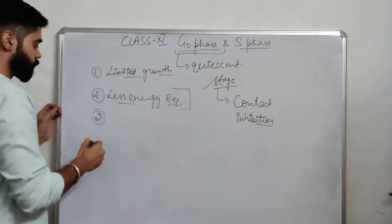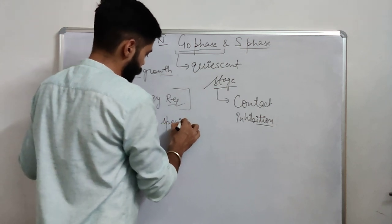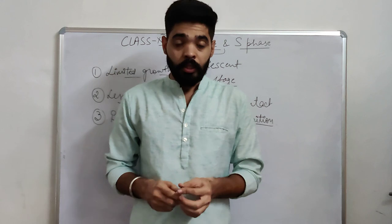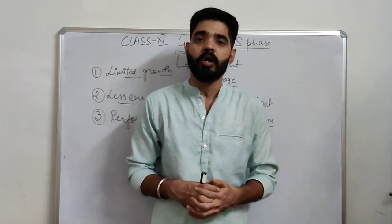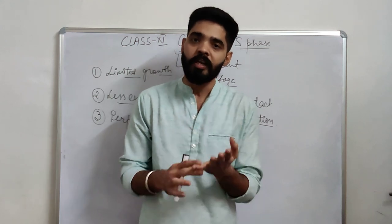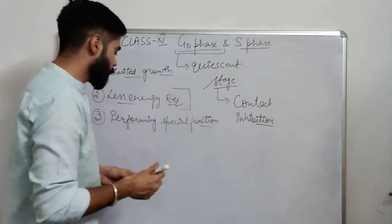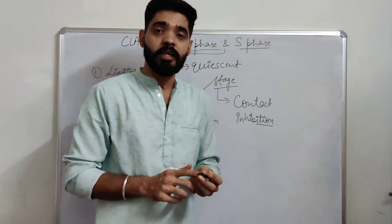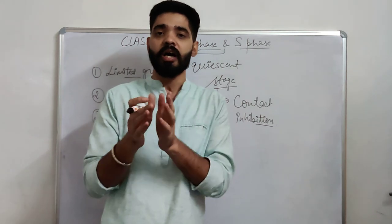Third significance: performing special functions. A cell in G0 phase can perform certain functions that continuously dividing cells cannot. For example, immunological cells can produce antibodies, and T lymphocytes can provide cell-mediated immunity. After division, a cell completes G1 phase, enters G0 phase, and undergoes differentiation — being assigned a particular function.